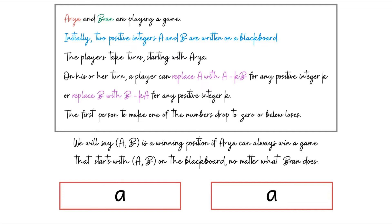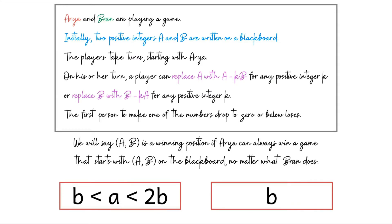What if the two numbers are identical? Any move the first player makes is a losing move — there's no way to keep both numbers positive. So equal numbers is not a winning position for the first player. What if one number is a multiple of the other, say r·a and a with r strictly greater than 1? The first player can remove r minus 1 copies of a from r·a to reach (a, a), which is losing for the second player. So this is a winning position.